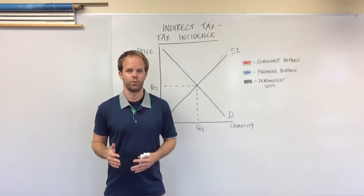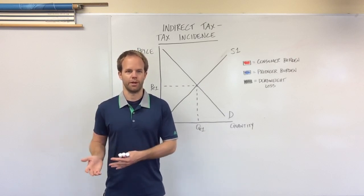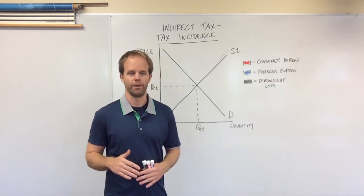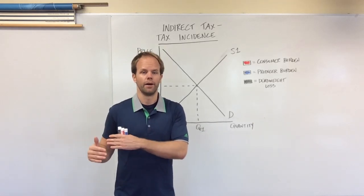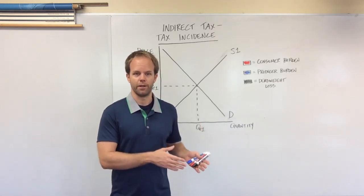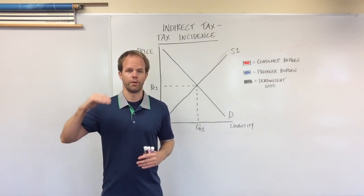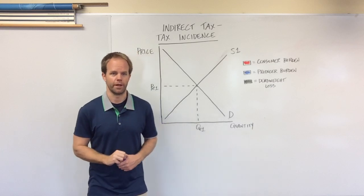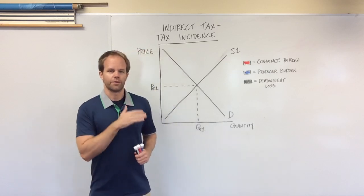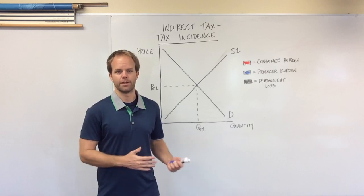Then there's also an ad valorem tax — we'll get to this in another video. An ad valorem tax is a percentage-based thing. So if you buy one gallon of alcohol, the more alcohol quantity you buy, you'll pay a higher rate. Maybe if you buy a pint of alcohol you'll pay 10%, but if you buy a gallon you'll pay 25%. So the greater the quantity, the greater the percentage — that is an ad valorem tax. For the sake of this video, we're going to talk about a specific tax, and that's how we're going to draw it.